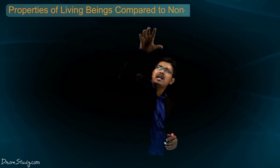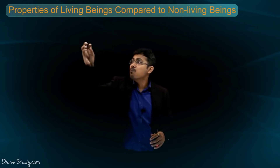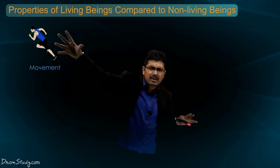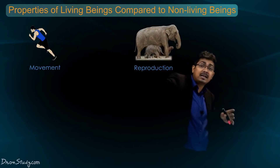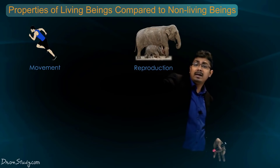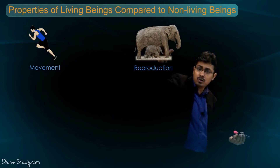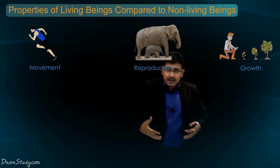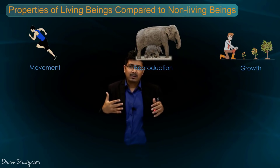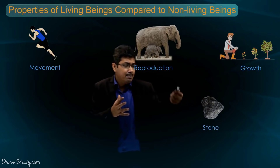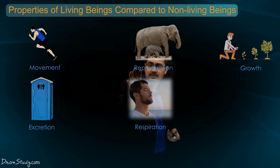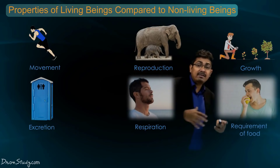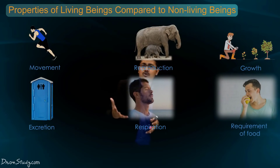Now let me put this heading students - Properties of living beings compared to non-living beings. Jaise students pehla property hai movement - living beings can move, non-living things apne aap move nahi karte hain. Reproduction - living beings reproduce karte hain, jaise haathi ka bacha haathi, dog ka bacha dog. Plants bhi reproduce karte hain. But kabhi aapne suna hai kisi marker ka bacha hoga ya chair ka bacha hoga? No students. Growth - hum log grow karte hain size mein, plants bhi grow karte hain. But stone generally grow nahi karta hai. Excretion. Respiration. Requirement of food - so students, living beings ko hi food chahiye hota hai, non-living things ko food nahi chahiye hota hai.